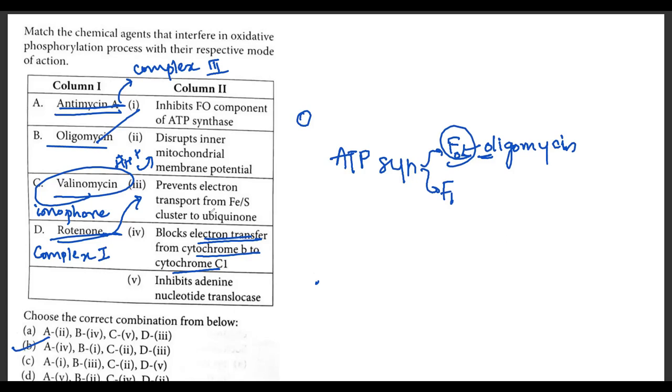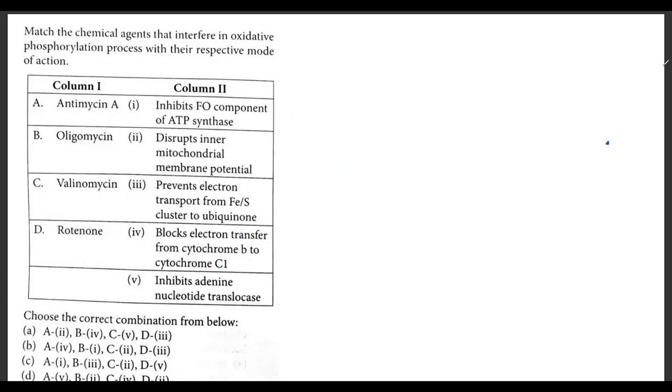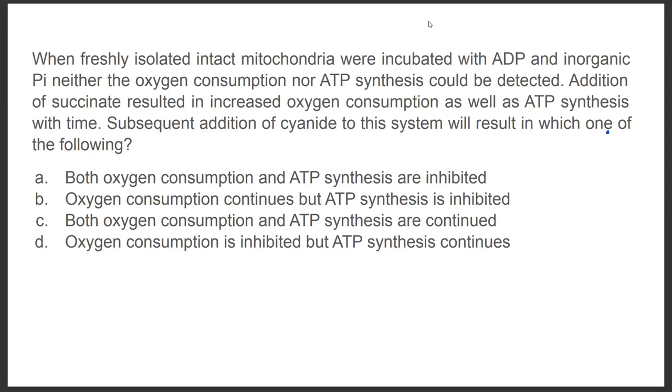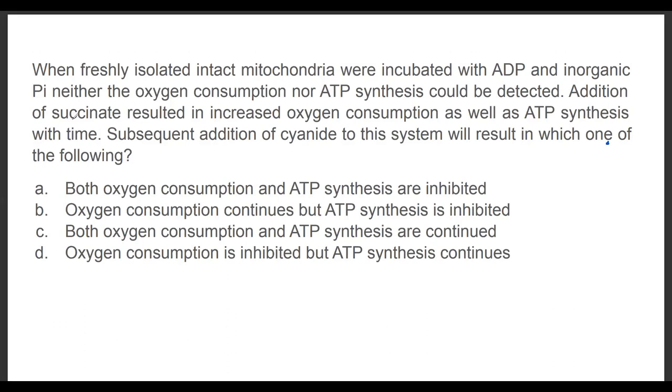Going on to the next question. When freshly isolated, intact mitochondria were incubated with ADP and organic Pi, neither the oxygen consumption nor the ATP synthesis could be detected. Addition of succinate increased oxygen consumption as well as ATP synthesis. Now after this, they added cyanide to the system. Which of the following will be the result?